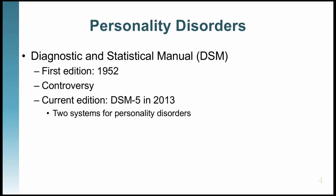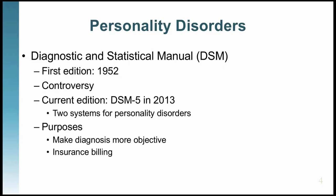Why do we have the DSM? First, so that when clinicians have a patient who is referred to another clinician, everyone knows what's going on — the diagnosis gives a list of behaviors or issues so both clinicians understand that person. The second reason, which seems strange but is true, is so clinicians could bill insurance companies. The purposes of the DSM are to increase objectivity across clinicians and to improve billing.